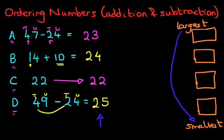23, 24, 22 and 25? Well, it's a nice easy one. It is 25 is the largest. It is D. 25 is D. So let's write down D.